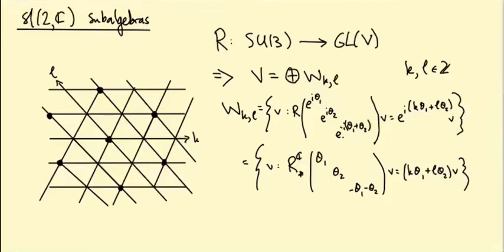We're looking for the vectors V which are simultaneously eigenvectors for all of those matrices, where the eigenvalue depends on θ1 and θ2 — it's going to be e^{i(Kθ1 + Lθ2)}.